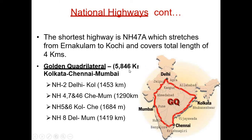The Golden Quadrilateral is approximately 5,846 kilometers and connects the four metropolitan cities: Delhi to Kolkata, Kolkata to Chennai, Chennai to Mumbai, and Mumbai to Delhi. It seems like a quadrilateral, that is why it is called the Golden Quadrilateral. For example, NH2 Delhi to Kolkata, NH4 Chennai to Mumbai, NH5 and 6 Kolkata to Chennai, and NH8 Delhi to Mumbai — these are parts of the Golden Quadrilateral.